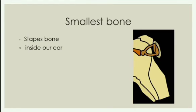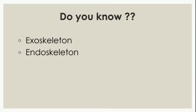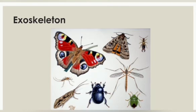The stapes bone is the smallest bone and it is inside our ear. Do you know about exoskeleton and endoskeleton? Exoskeleton means veruni dhancha and endoskeleton means androoni dhancha. First we will discuss about exoskeleton. Exoskeleton is a skeleton that is outside the body. Some insects have skeleton outside their body, for example cockroach and fly.